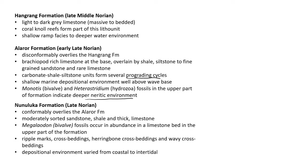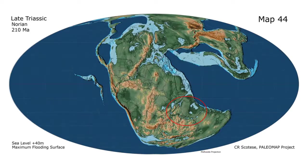The Nunuluka formation — late Norian — conformably overlies the Alaror formation. It has sandstones, shales, thick limestones, and Megalodon bivalves, which occur in abundance in a limestone bed in the upper part. Common sedimentary structures are ripple marks, cross bedding, herringbone cross bedding, and wavy cross bedding, and the depositional environment is coastal to intertidal based on these structures.